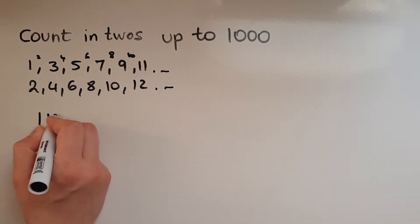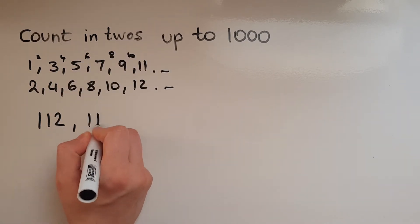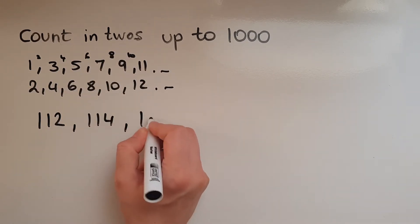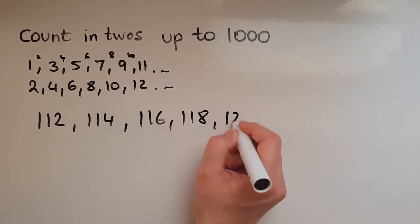So if it's 112 and we're counting in twos then it would be 114, 116, 118, 120.